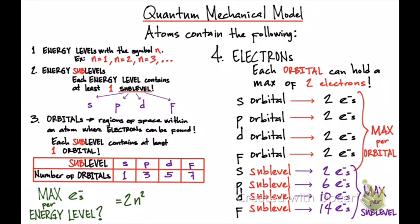For example, if you have energy level 1 (n=1), you plug in: 2 times 1 squared equals 2. So in n=1, the maximum number of electrons is 2. For n=2, that would be 2 times 2 squared, which is 2 times 4 equals 8. So the maximum number of electrons on the second energy level is 8.